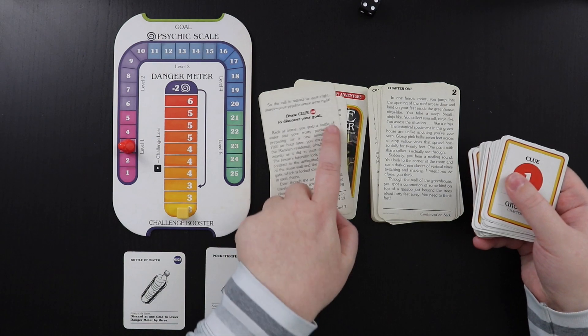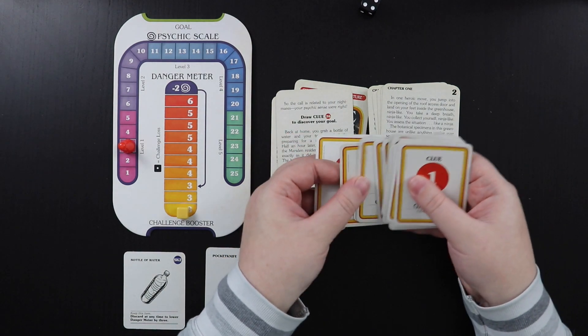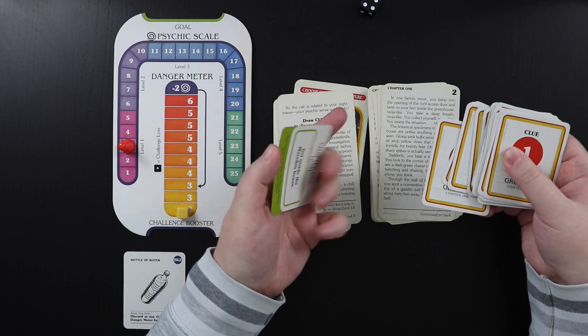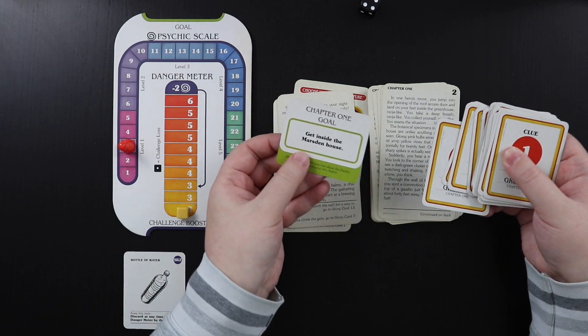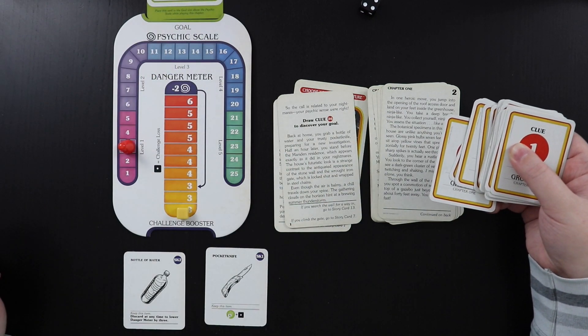So every time it gives you one of these little circles, you're drawing from this clue deck. So that's 27, 26. This is our clue. What is our goal? To get in to the Marsden house. So you put your goal right here, and you just keep playing. And that is House of Danger.